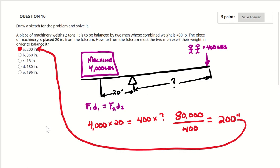Last example here, this is the lever with the fulcrum and we're going to draw a sketch and solve the problem. A piece of machinery weighs two tons. A ton is 2000 pounds. So machine total weight is 4000 pounds.